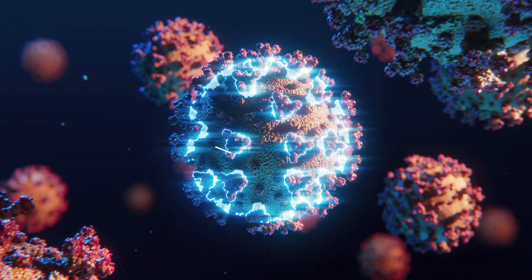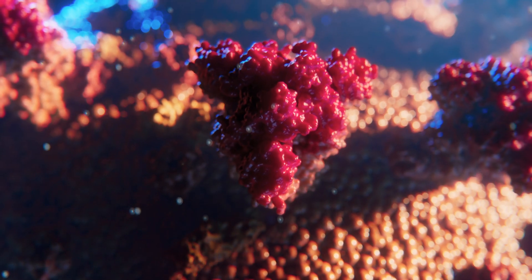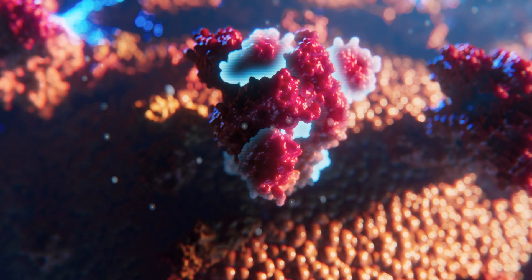The surface of the virus particle is covered with approximately 100 spike proteins. They always come in groups of three, in which the proteins are intertwined.